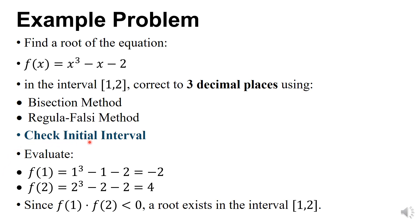Check initial interval. Now a = 1 and b = 2. If we put f(a), then we get -2. If we put the value of b in this function, then we get 4. You can see here the function is given.